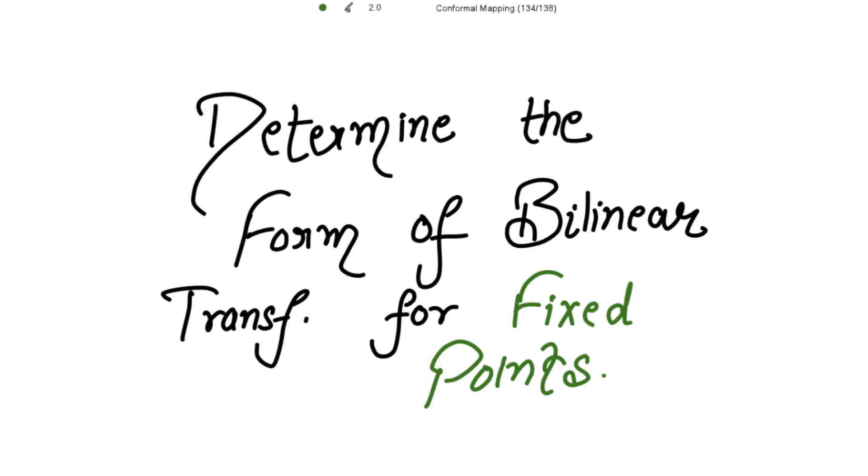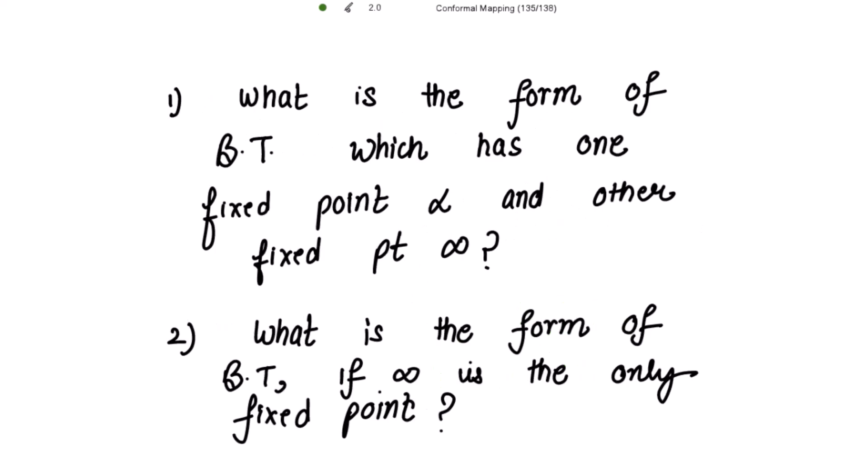Determine the form of bilinear transformation for given fixed points. The first question asks: what is the form of bilinear transformation which has one finite fixed point alpha and another fixed point at infinity? Two fixed points are given — one is finite and the other is infinite. We are going to use the conditions for these fixed points to determine the form of the bilinear transformation.